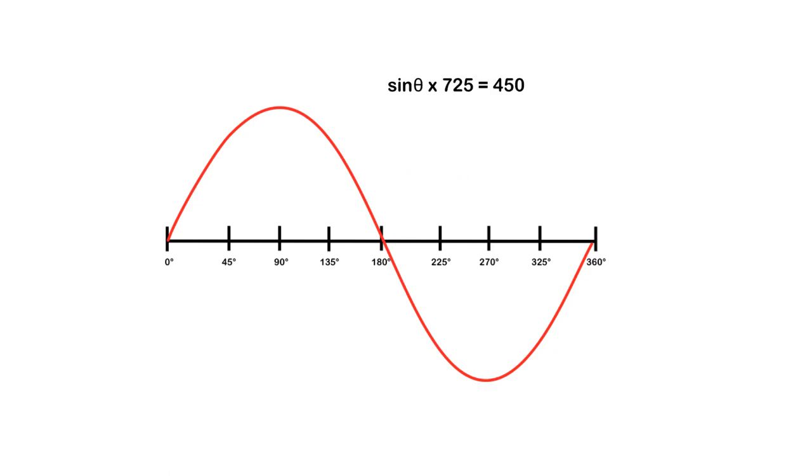So again, we're using what we know. Sine theta times the peak value of 725 gives us an instantaneous value of 450. We're going to transpose that 725 to the other side. Whatever we do to one side of the equation, we do to the other. So sine of theta is equal to 450 divided by 725. The sine of theta is equal to 0.621.